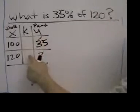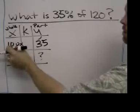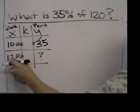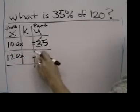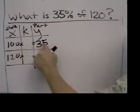Now we need to figure out the value of K. K is that mystery value that could be multiplied by 100 to get 35. And we'll multiply 120 by that same mystery number to get the value of this question mark. 100 times what equals 35?